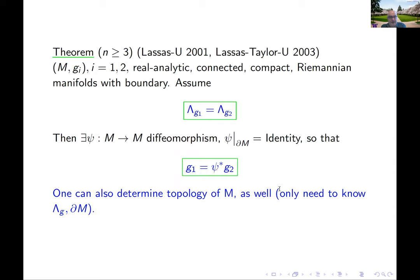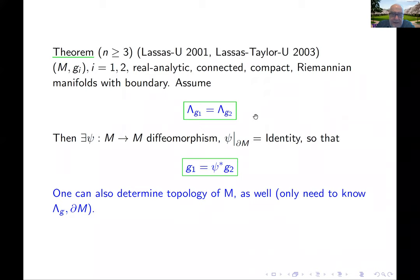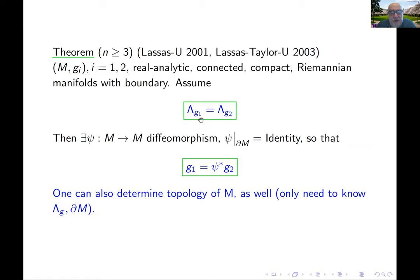In dimension three, unfortunately this is largely open in the C^∞ case. There are counterexamples with non-smooth metrics by Daudé, Kamran, and Nicolas. But in the real analytic case, the result is known — proven in a paper with Matti Lassas, with a nicer proof later by Michael Taylor. Whether this is true for smooth metrics is considered perhaps the most important open problem from the theoretical point of view.